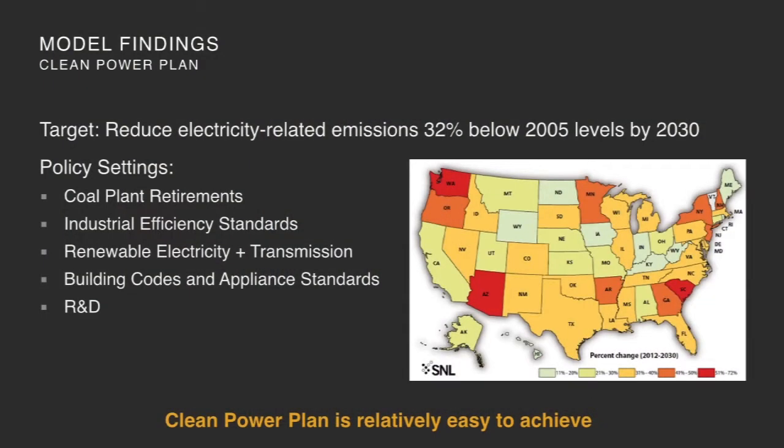If you do a fuel efficiency standard for cars and you also do a VMT reduction strategy, you can't add up the results from each — the total is less than what they would each contribute. So we developed scripts that run this model tens of thousands of times for a given goal, to find the best mix of policies to achieve that goal. We did that for the Clean Power Plan. With five policies, we can achieve the Clean Power Plan very easily and save consumers a great deal of money along the way.